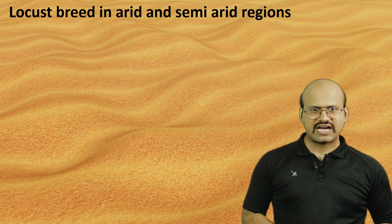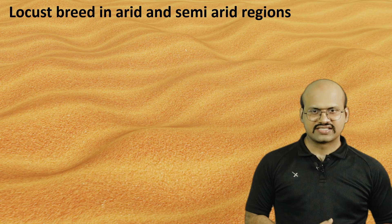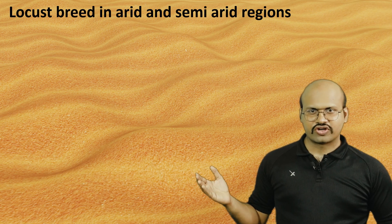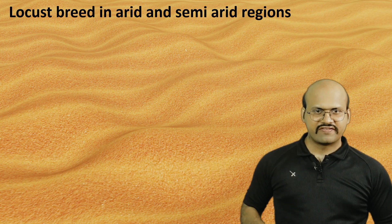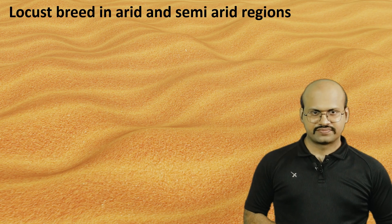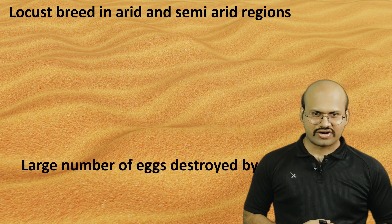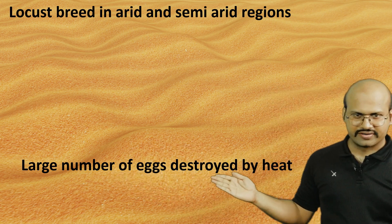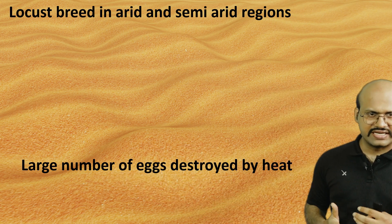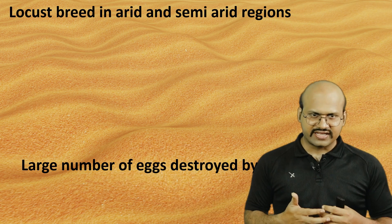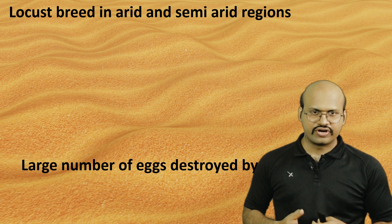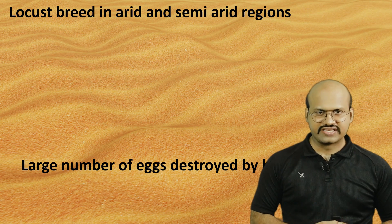These breeding regions have semi-arid or desert-like conditions. Locusts lay their eggs here, but because of scarcity of food and water, many eggs are destroyed by the heat. Even the eggs that do hatch often result in individuals that are destroyed due to the lack of food and water in these regions.